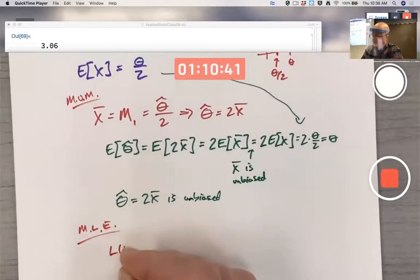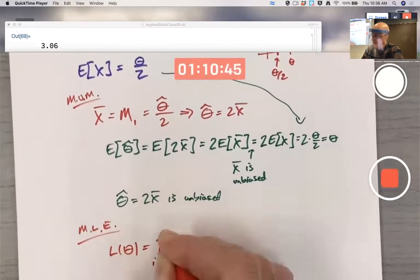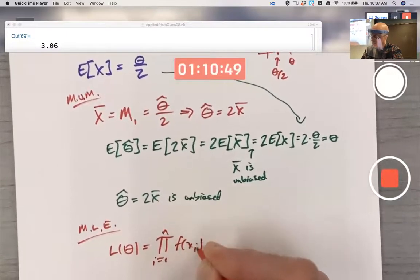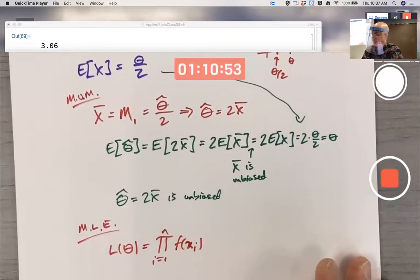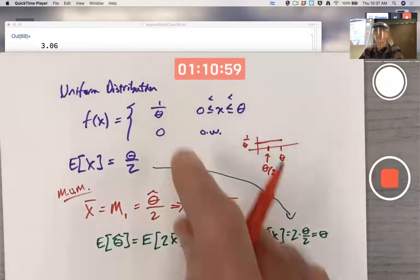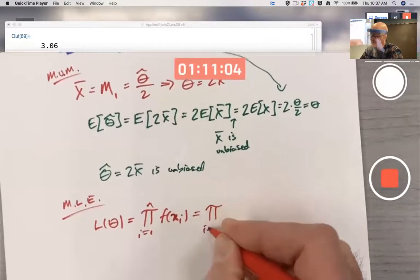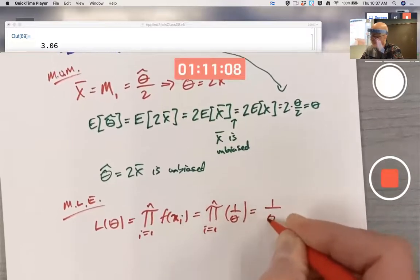What is the likelihood function? It's a function of theta now. But wait a minute. F of X i. This is a bunch of one over thetas. You're multiplying a bunch of things that are all one over thetas. In other words, this is one over theta to the n power.